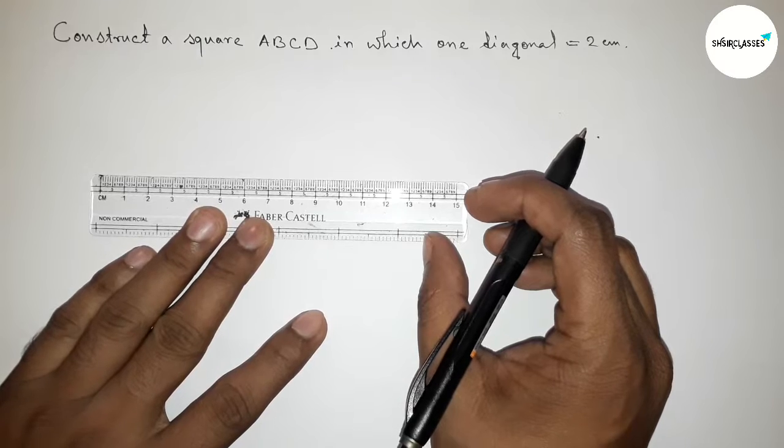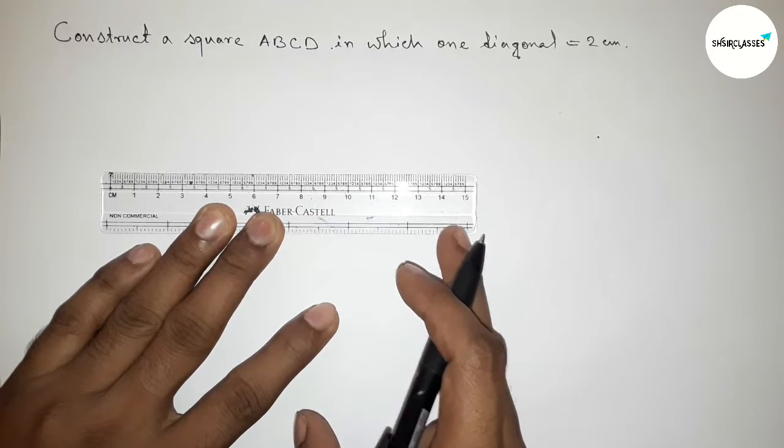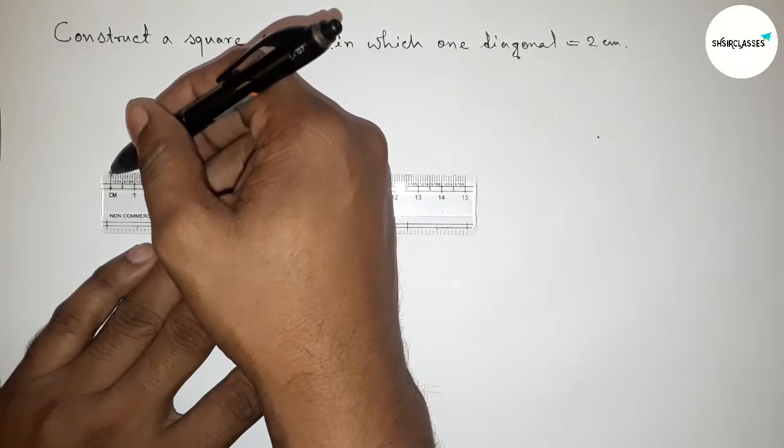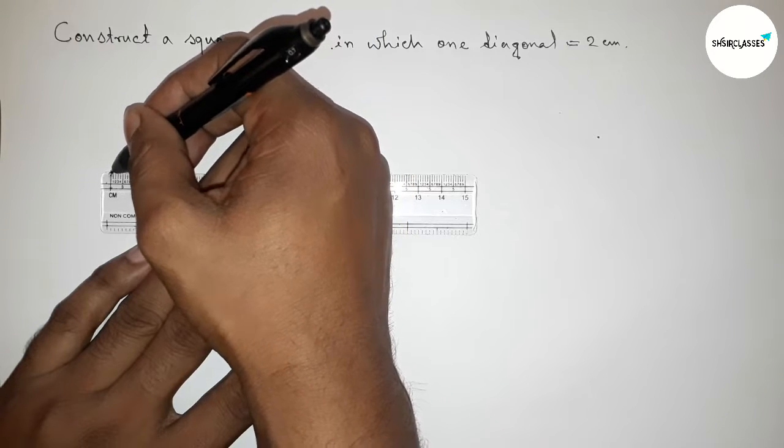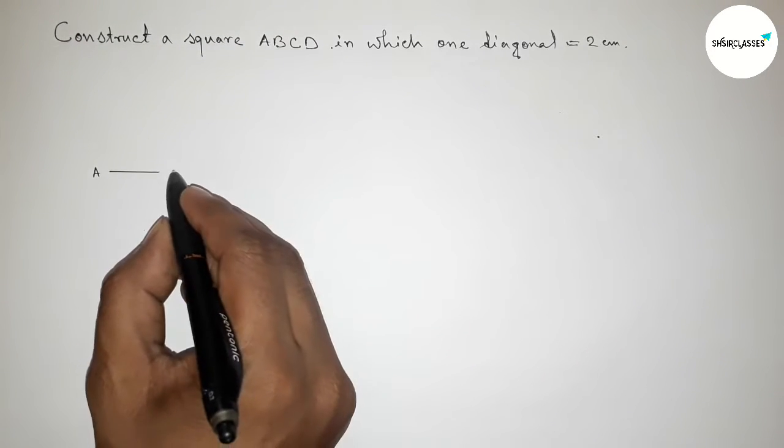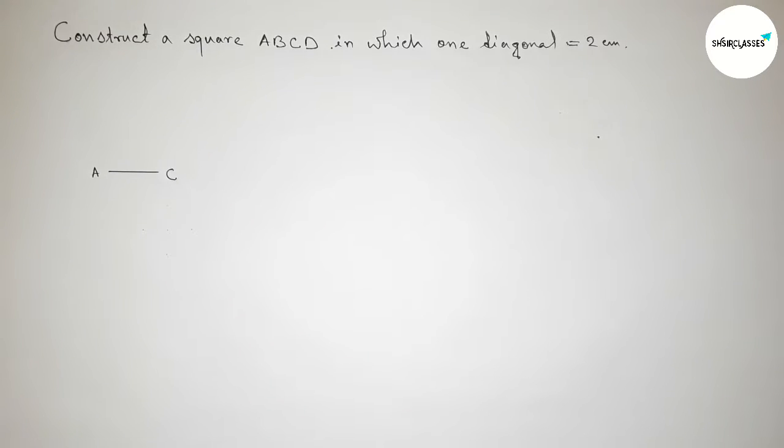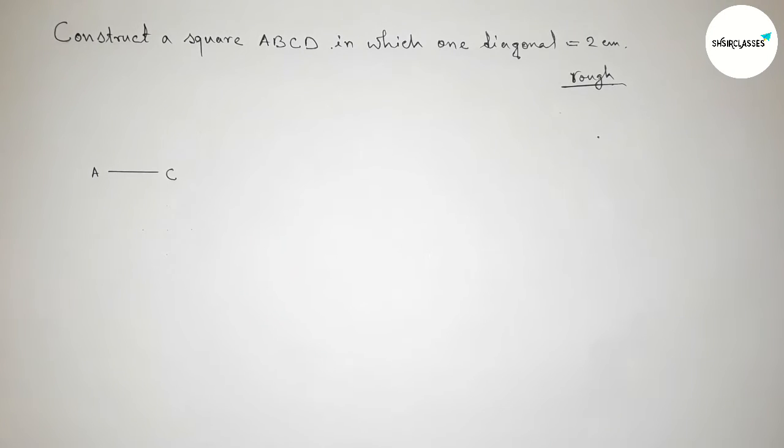First of all with the help of scale, first drawing here the diagonal 2 centimeter. So this is 0 starting, 0 and this is 2 centimeter line. Now taking here A and here C.